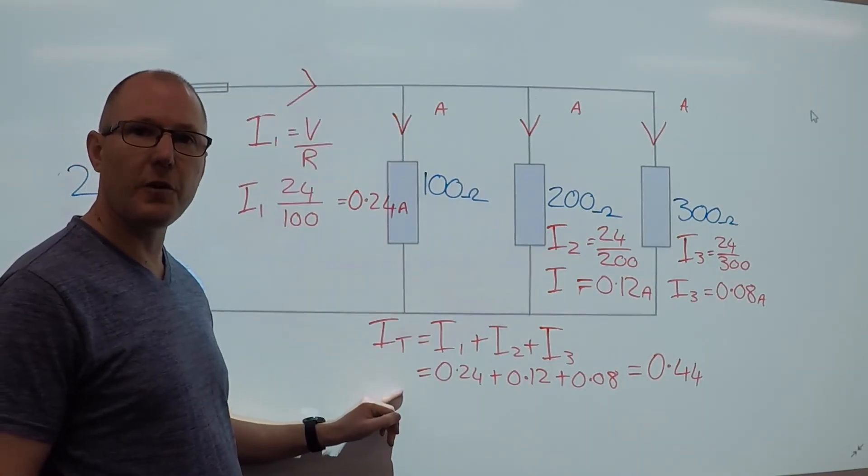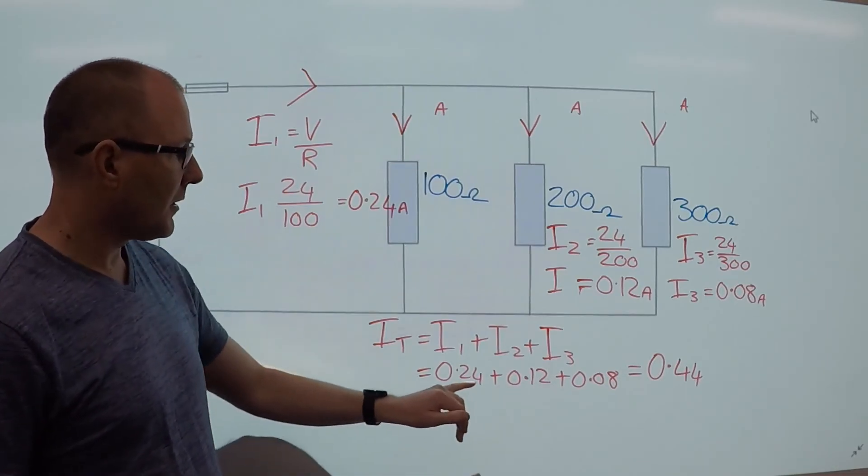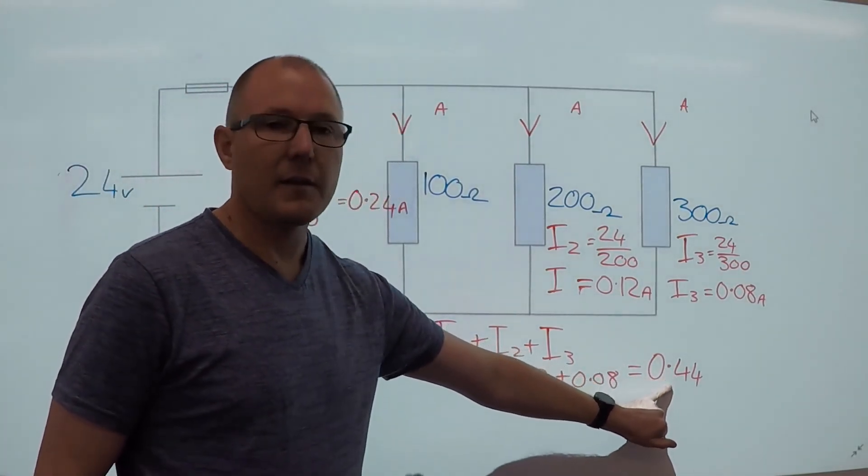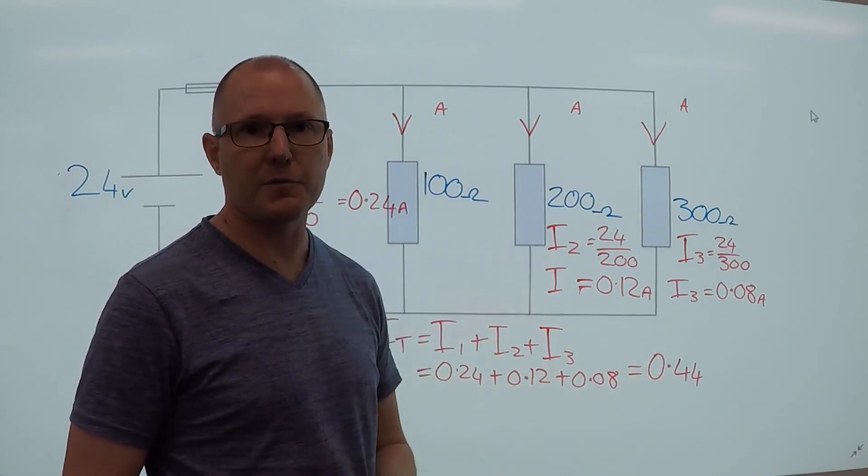All we have to do to find the total current is add up those individual currents. So that gives us a total current of 0.44 amps throughout the circuit.